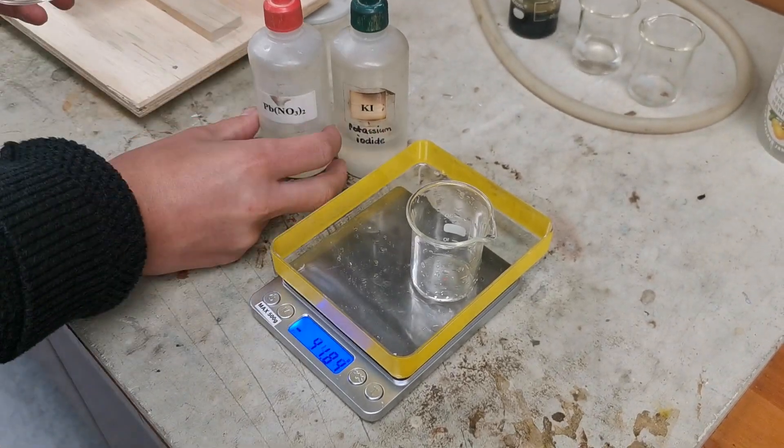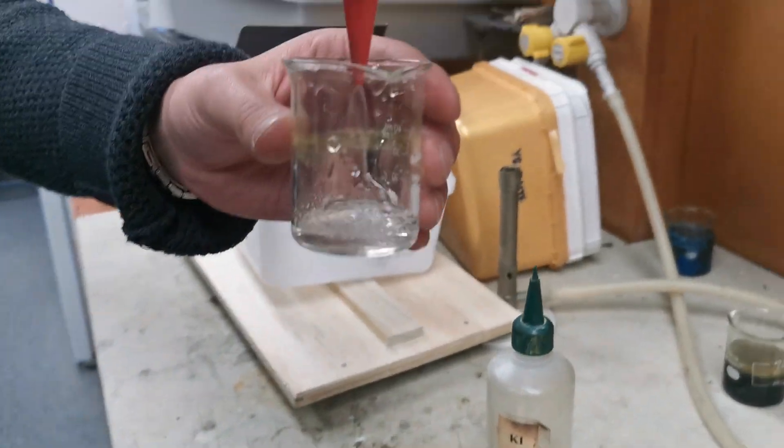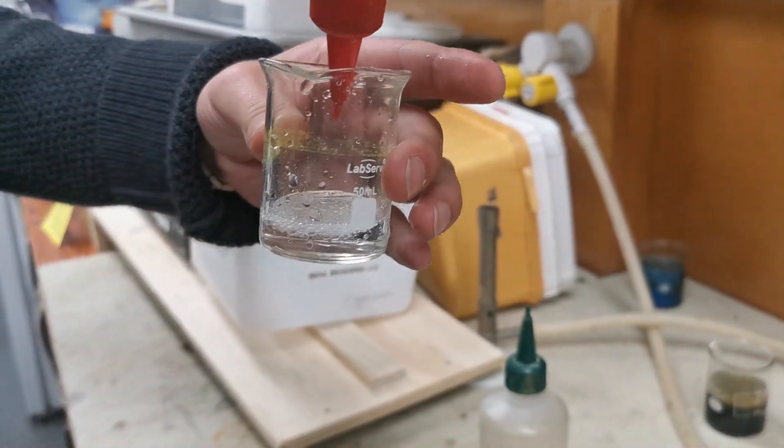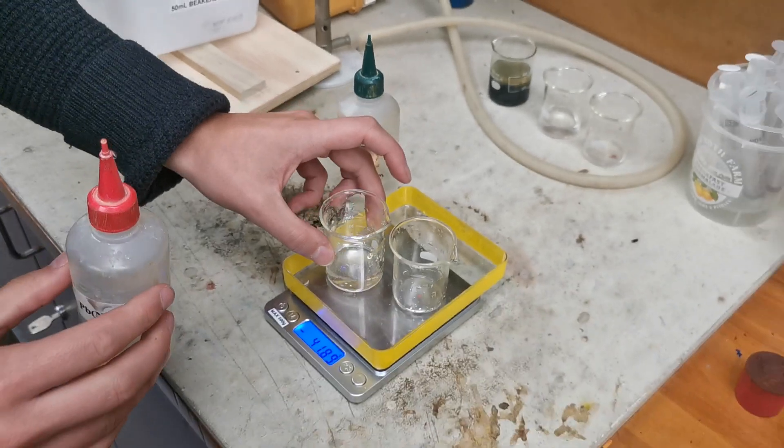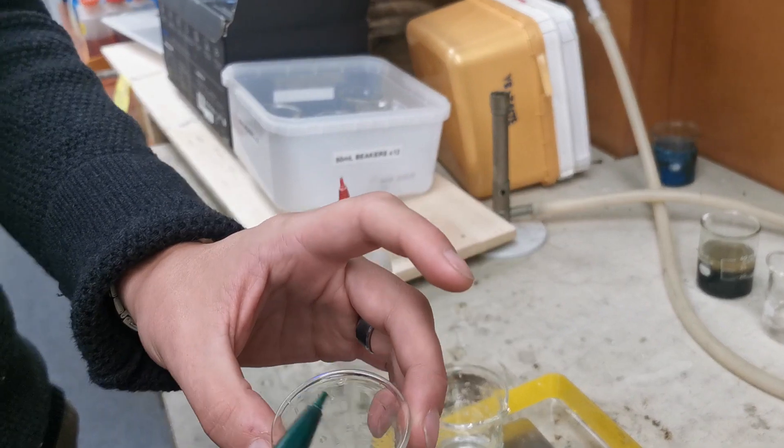Into the first beaker we're going to add a little bit of lead nitrate, about 10 to 15 mils. Into the second beaker we're going to add a little bit of potassium iodide, about the same amount again.